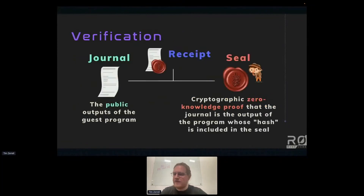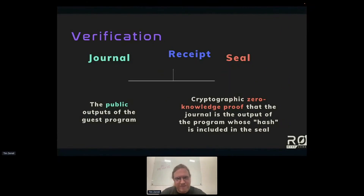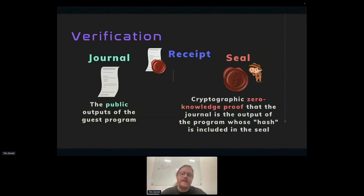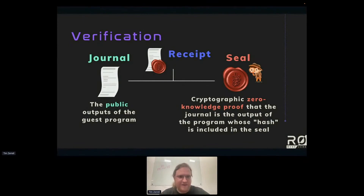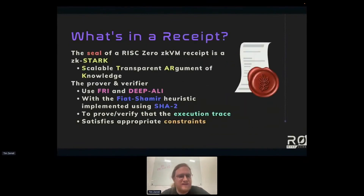We've encoded things into algebra so we can start doing cryptographic math on it. What actually goes into the seal? The seal contains a ZK-STARK — a Scalable Transparent Argument of Knowledge. We haven't yet solved the zero knowledge problem; encoding as algebra is just the first step.